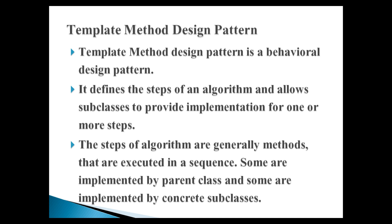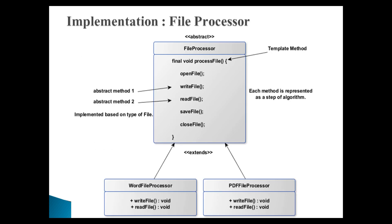Let's see the tutorial overview through a class diagram. Here, FileProcessor is an abstract Java class. It has a method by name processFile. This method is our template method — it will demonstrate how the template method design pattern works. This method is marked as final, so that no subclasses can override it.